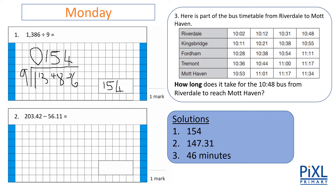Our next question: we have 203.42 and we are subtracting 56.11. In order to make sure my columns are aligned, I'm going to start with my hundredths column and put my one there. Then come to my tenths column, put my one there, put a decimal point in — remember that never moves. Come to my ones column, put my six in there to make sure it's aligned nicely.